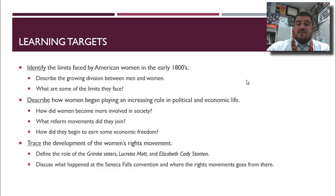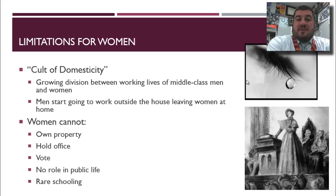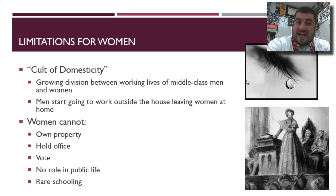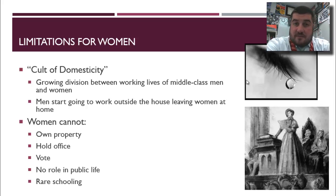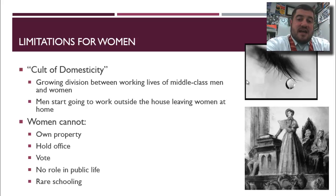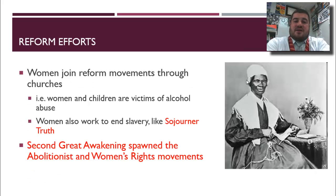We'll talk about the development of the women's rights movement. The limitations for women in the 1800s: they cannot own any property, they cannot hold office, they cannot vote, they have no role in public life whatsoever, and they have very rare schooling. A lot of this can be blamed on the increasing industrialization of society. During the Industrial Revolution, there's a growing division between the lives of middle-class men and women. Men are going to work outside the home in factories, leaving women at home. Women are unfortunately becoming victims of the cult of domesticity.